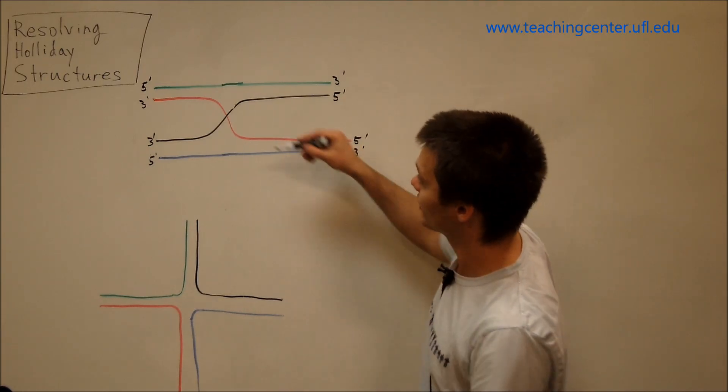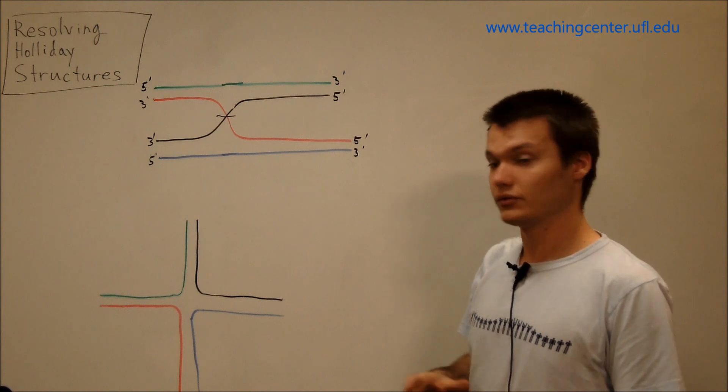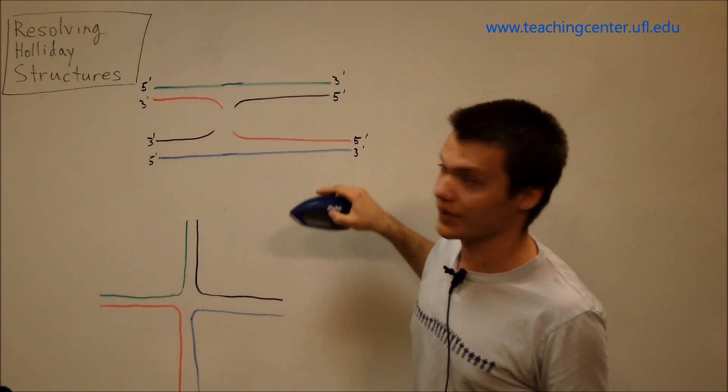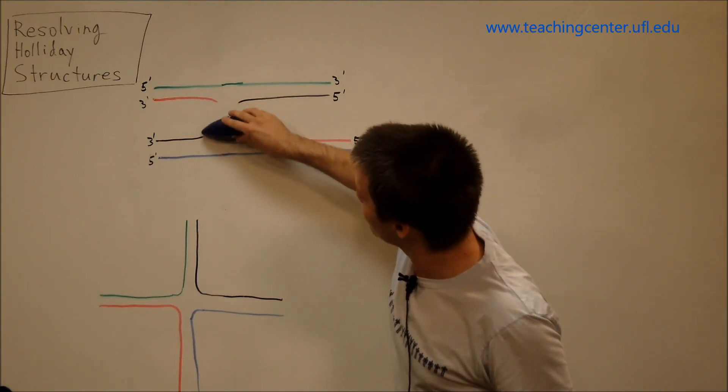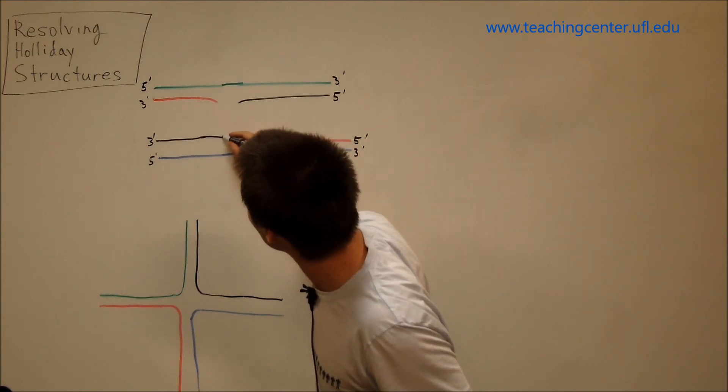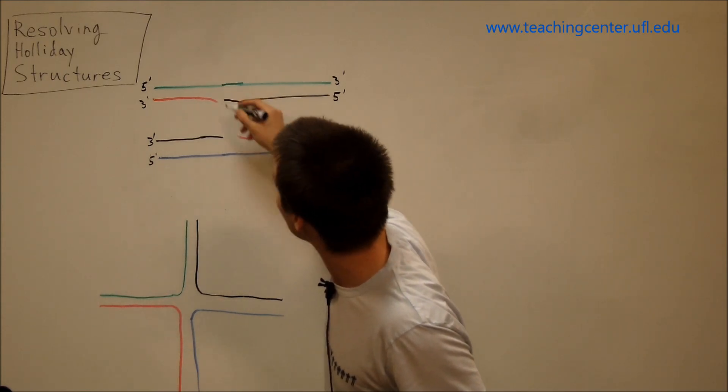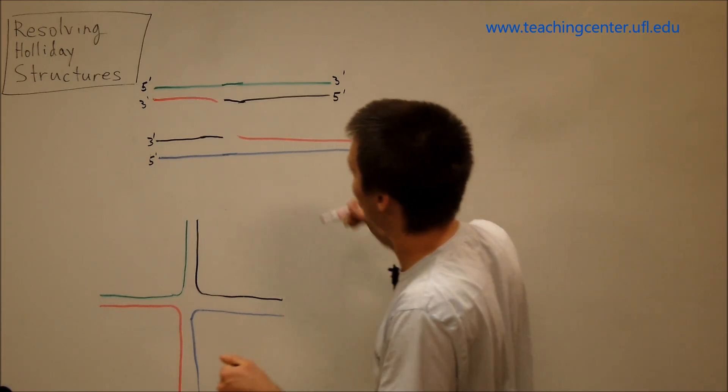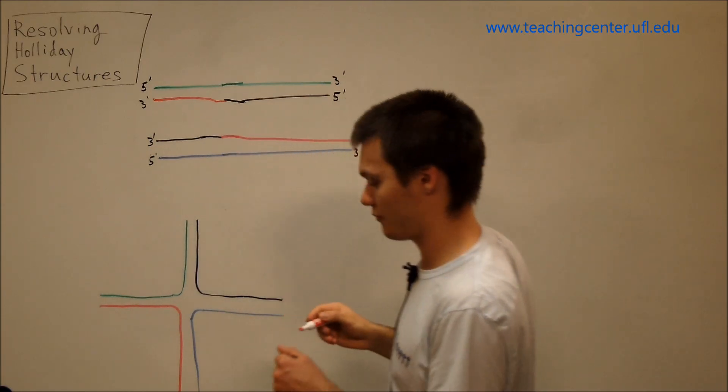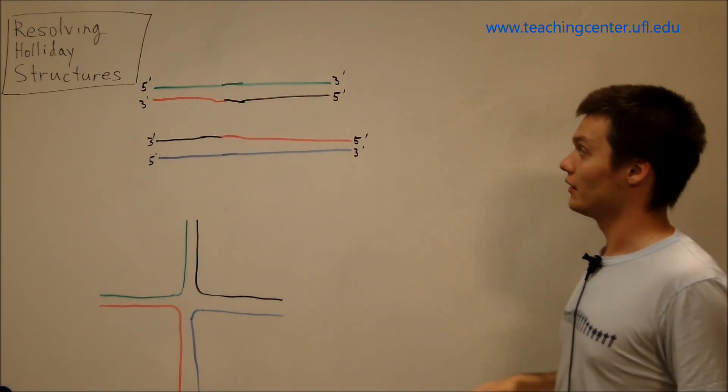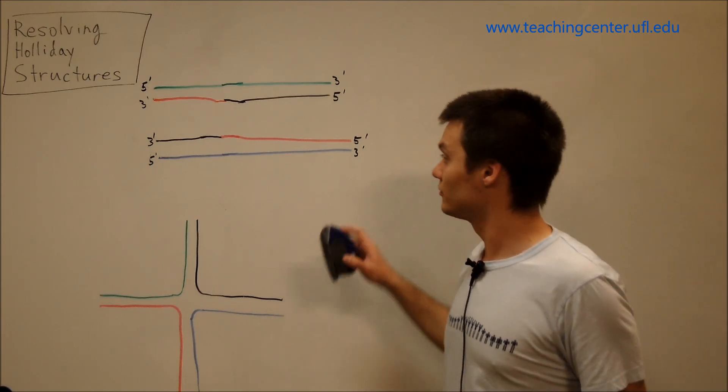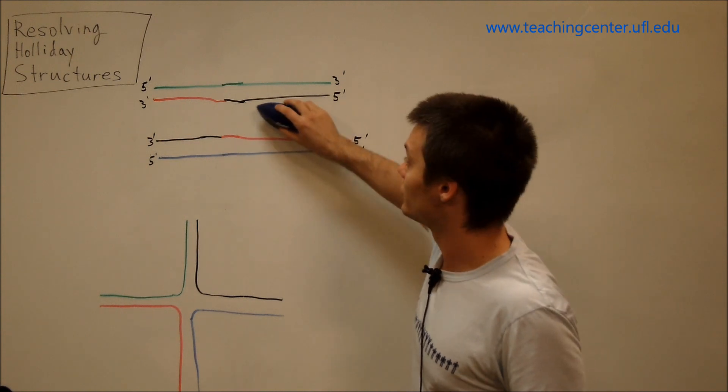And we make a cut, and then we ligate the two ends. So make a cut, and then ligate the two ends. So join the red strand and the black strand. And that's one way to resolve a Holliday junction. Now that is probably the easiest one to visualize.